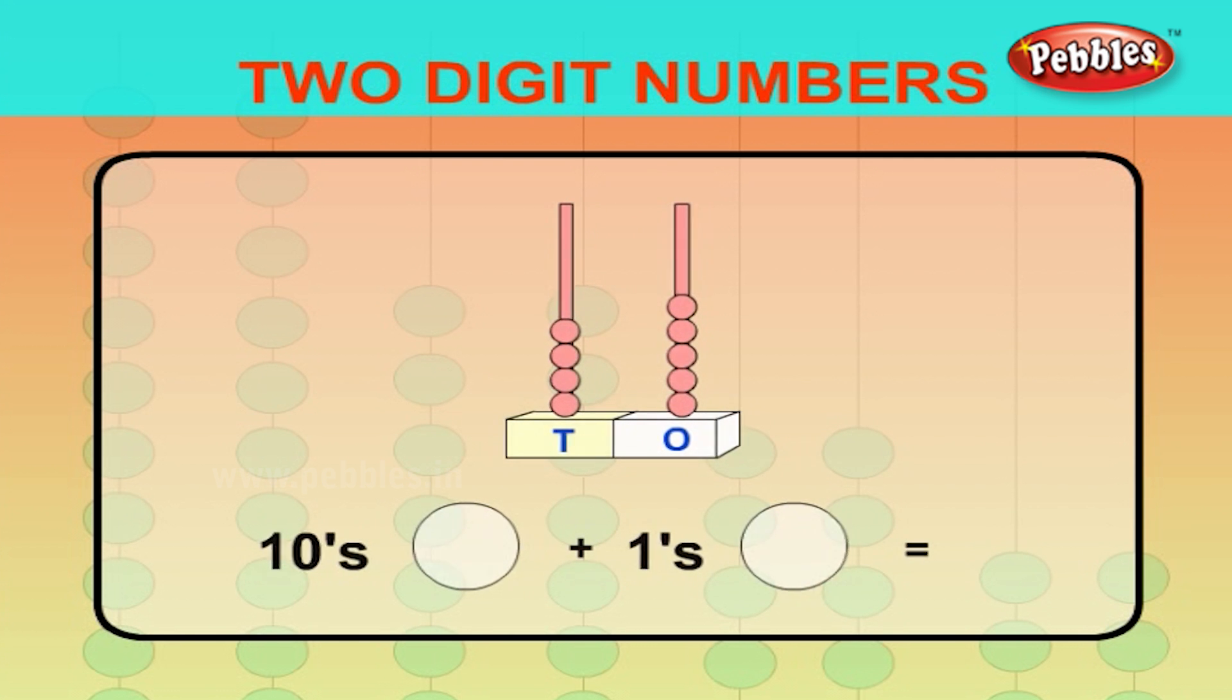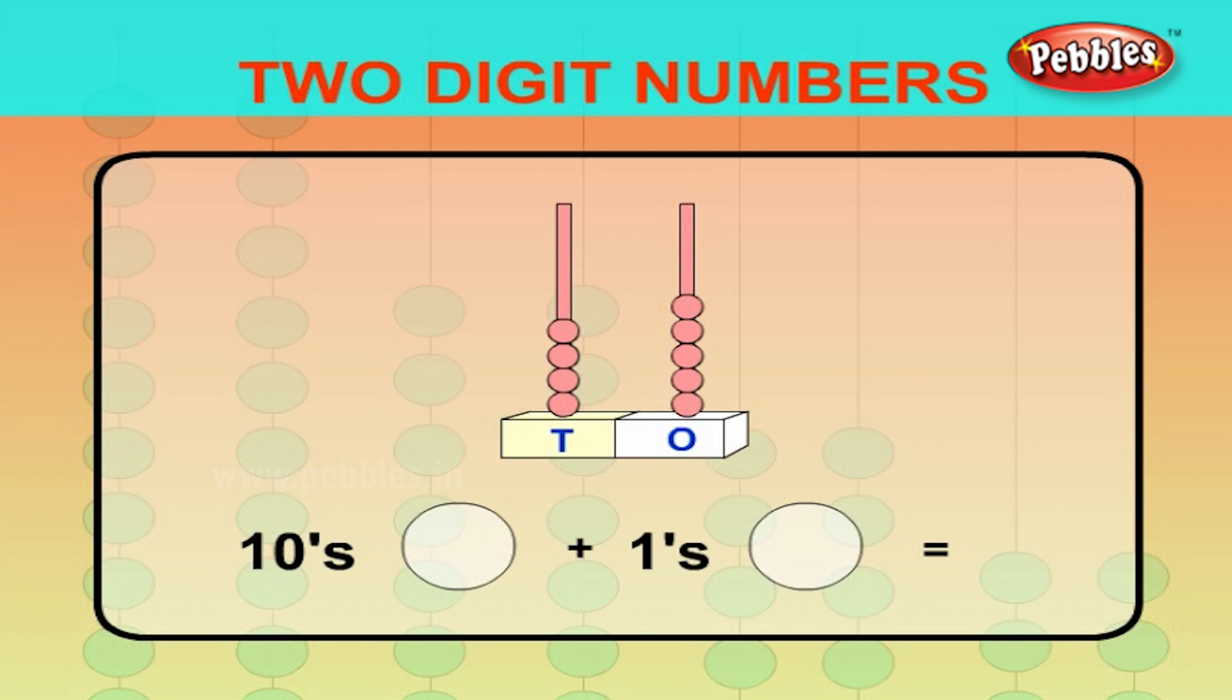Now, from the given abacus, let us count the beads and write the answer. There are four beads in the 10s position. 1, 2, 3, 4, 5. There are five beads in the 1s position. So, the number is 45.